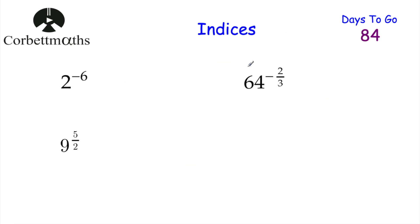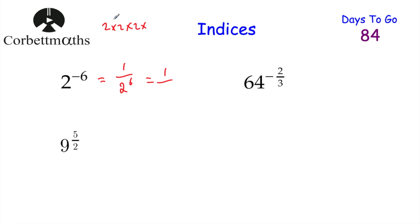Here are more practice questions — press pause and try them. Work out 2 to the power of negative 6: write 1 over 2⁶. 2 × 2 × 2 × 2 × 2 × 2 = 64, so the answer is 1/64. Next: 9 to the power of 5/2. Square root of 9 = 3, then 3 to the power of 5: 3⁵ = 243. So 9 to the power of 5/2 equals 243.